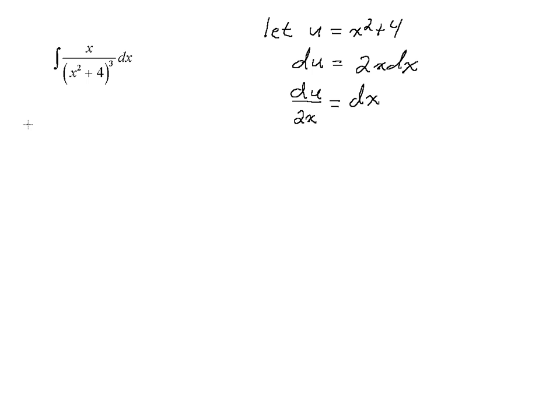Now we'll make our substitution. So x is just there. And then x squared plus 4, well, we said that was equal to u. So we'll have u to the third power in the denominator. And then dx is now du over 2x. And notice that we have x over x, so those can cancel.